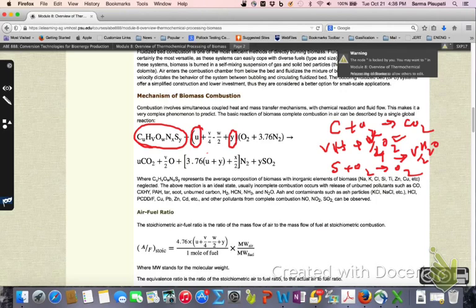So that gives us the number of moles of oxygen required. This is the number: U plus V over four minus W over two plus Y.